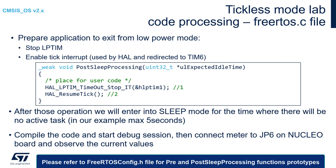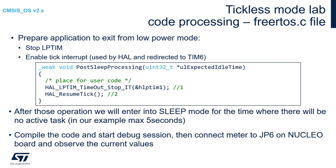We can connect our multimeter to JP6 jumper on the Nucleo L476RG, or connect it to the XNucleo LPM01A board. Then we can monitor the current consumption based on the application we compiled and programmed into the board. On the next slides I will present how we can do it within XNucleo and what the final result will be.